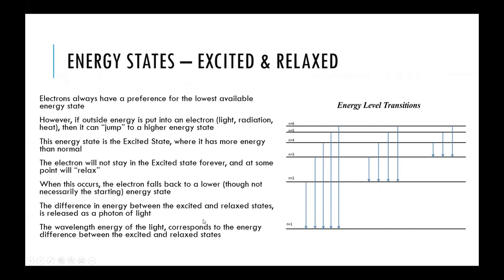Electrons typically want to be at the lowest energy level possible — they always want to exert the least amount of energy. If an outside source adds a lot of energy, the electron will absorb some of that and go up to a higher energy level. After an amount of time — usually near instantaneous — the electron will relax back down to a lower energy level. The difference between these energy levels — that amount of energy — is released as a photon of light.